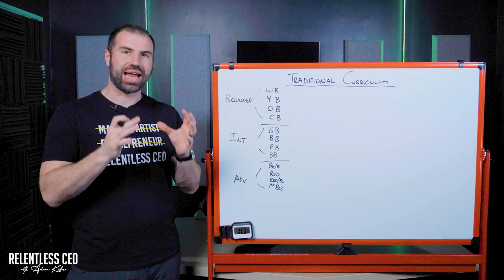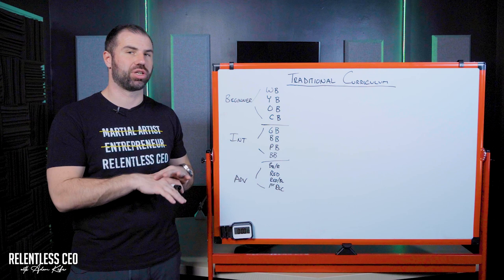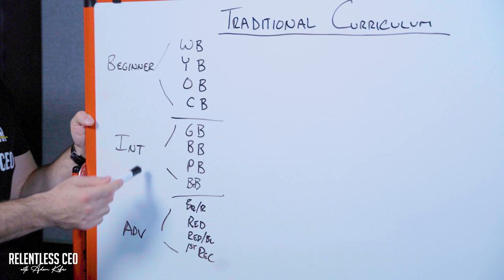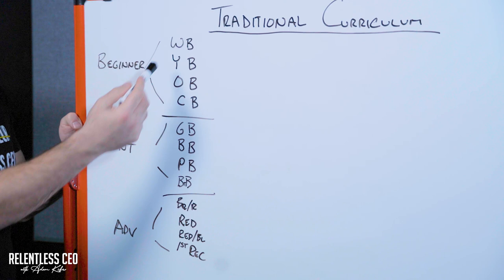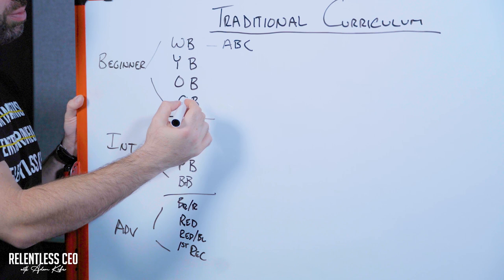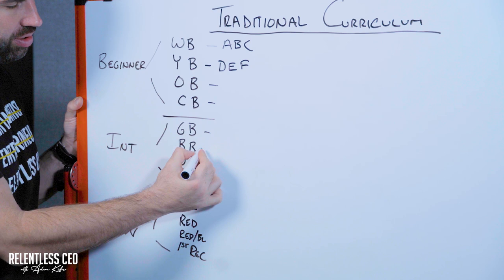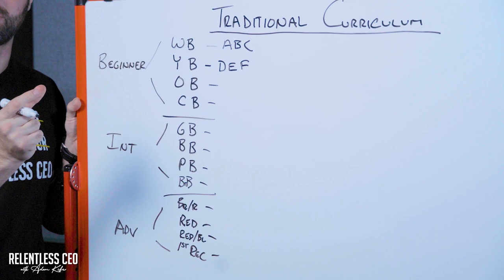Today we're covering rotating curriculum and how to properly structure it so you can easily manage any class at your facility. Before we jump into that, let's look at what traditional martial arts curriculum has looked like for ages. Traditionally, let's say we have three different class levels: beginner, intermediate, advanced, and for this example we'll say four belts per level. Traditional curriculum typically has, at white belt, a list of requirements — they need to learn ABC to move to yellow belt, then DEF to move to orange belt, and so on, where every single belt has a unique set of curriculum they need to learn to get to the next belt.